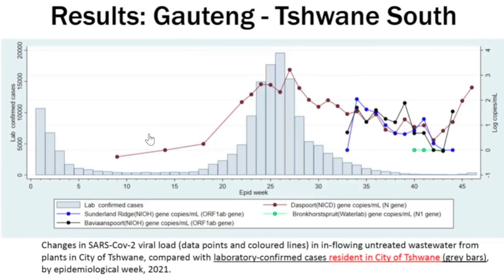Here are results from the Gauteng province in Tshwane City. You can see changes in the SARS-CoV-2 viral load — the data points and colored lines — in inflowing untreated wastewater from plants in the city of Tshwane, compared with bar graphs showing laboratory-confirmed cases of residents in the city of Tshwane, shown as gray bars by epidemiological week in 2021. The confirmed COVID cases shown in the bars appear to correlate well with the wastewater data.